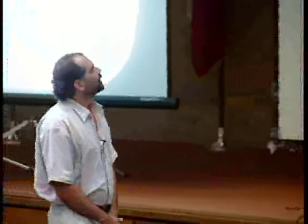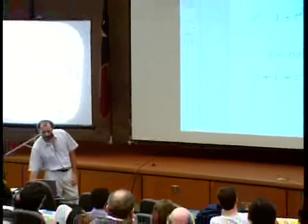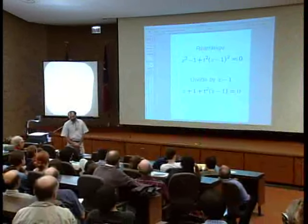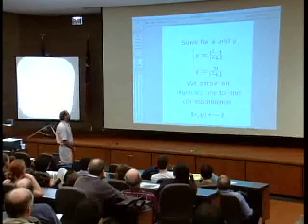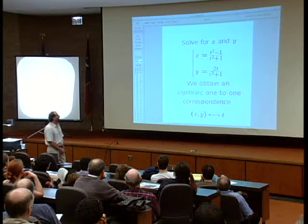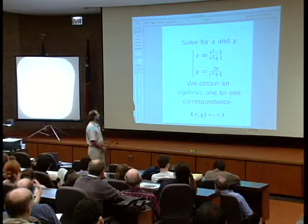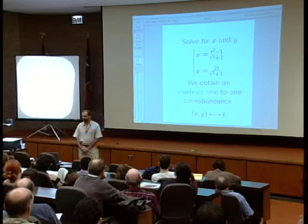Let's do the math. We have the equation of the line, and we can write it with t as the slope. We plug it into the equation of the circle, rearrange, bring the 1 to the left side, divide by (x − 1). Eventually we solve for x and y. So we get an algebraic one-to-one correspondence between the pairs of rational solutions (x, y) to our equation and the rational slopes t. That's essentially the whole story for this equation.